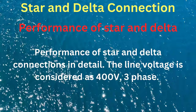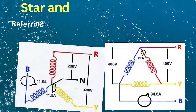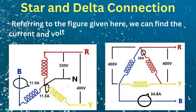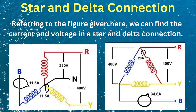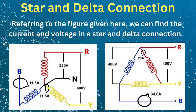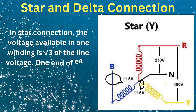The phase voltage is considered as 400 volts three-phase for reference. Referring to the figure given here, we can find the current and voltage in a star and delta connection. In a star connection, the voltage available in one winding is the line voltage divided by root three.